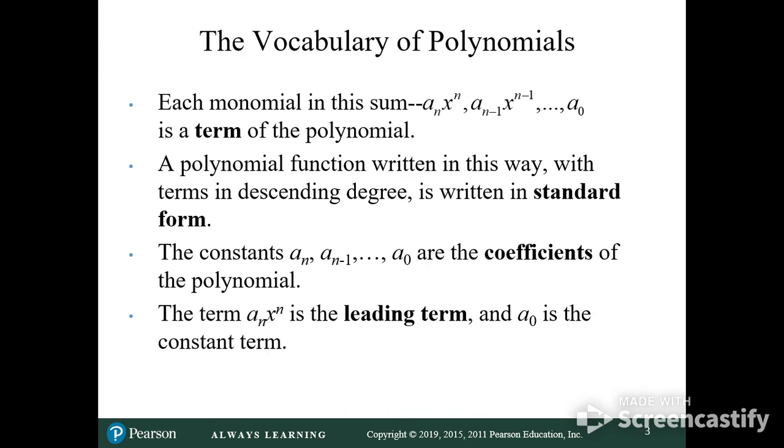So, a monomial is just one thing. Just one thing. It's just a term of a polynomial. A polynomial has multiple monomials added or subtracted together.